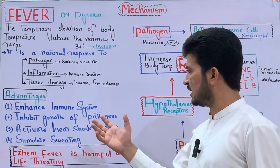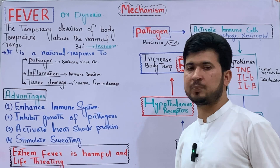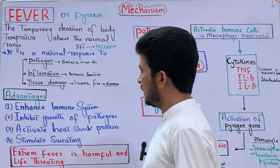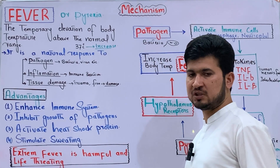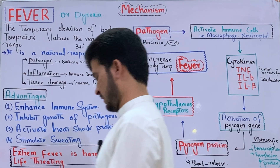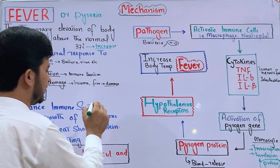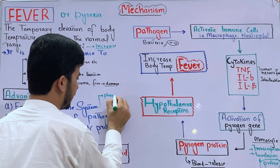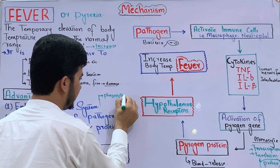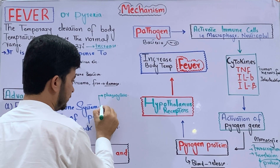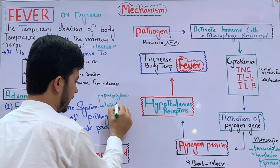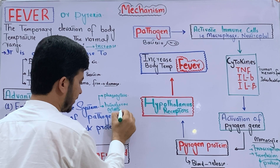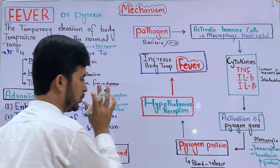The advantages of Pyrexia for the body: First, enhanced immune system. When the temperature increases, the immune system is enhanced and its activity increases. For example, phagocytosis activity increases — the phagocytic cells become more active.